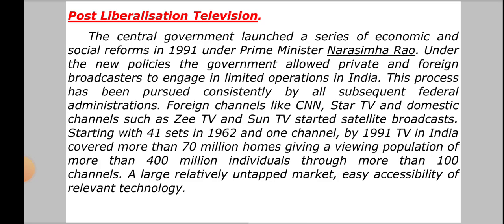The central government launched a series of economic and social reforms in 1991 under Prime Minister Narasimha Rao. Under the new policies, the government allowed private and foreign broadcasters to engage in limited operations in India, a process pursued consistently by all subsequent administrations. Foreign channels like CNN, Star TV, and domestic channels such as ZTV and Sun TV started satellite broadcasts. Starting with 41 sets in 1962 and one channel by 1991, TV in India covered more than 70 million homes, giving a viewing population of more than 400 million individuals through more than 100 channels.